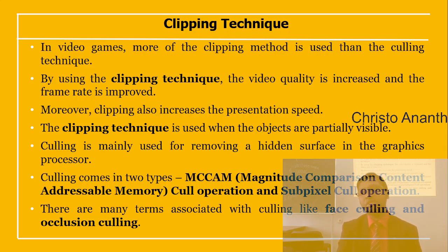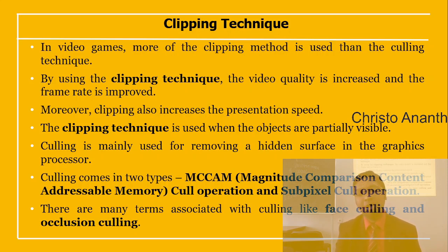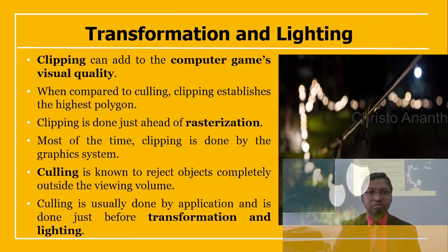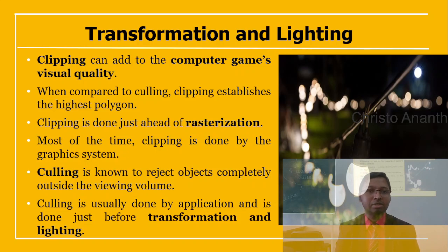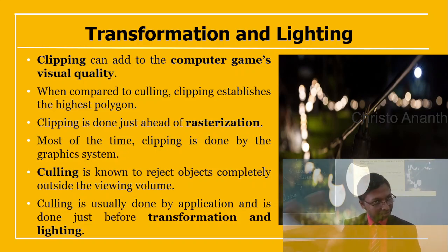Culling is used to remove hidden surfaces in the graphics processor. There are two types of culling operations: MCCAM (magnitude comparison content addressable memory) cull operation and sub-pixel cull operation. There are also terms like face culling and occlusion culling. Compared to culling, clipping establishes the highest polygon count. Culling rejects objects completely outside the viewing volume and is usually done by the application just before transformation and lighting.